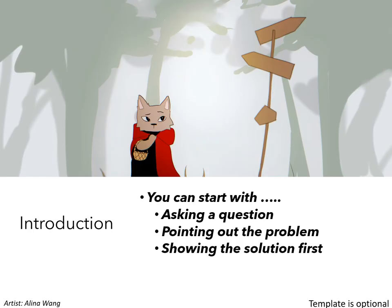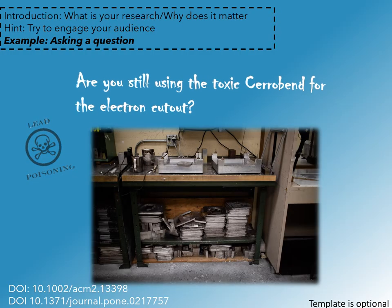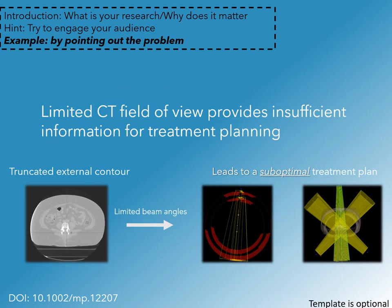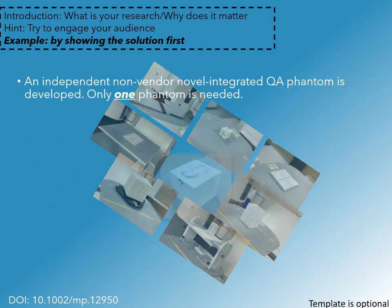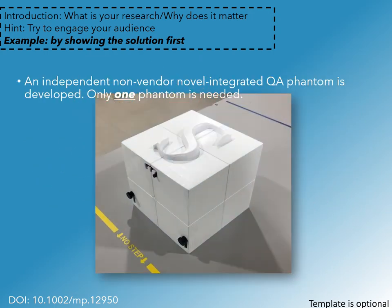Next, your introduction. As a researcher you have an important story to tell, one that can have a positive impact on your field. A video abstract is a great way to communicate the story of your research quickly and effectively. There are different ways to start the video abstract: try to engage your audience by asking a leading question, or start by pointing out the problem you're attempting to solve, or alternatively show the solution first to capture the audience's attention and entice them to continue watching.